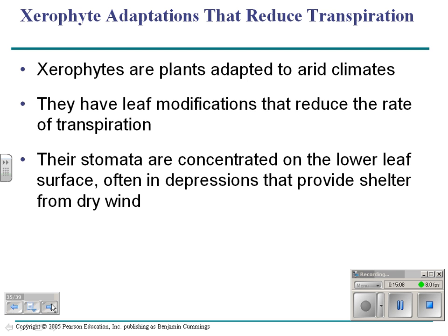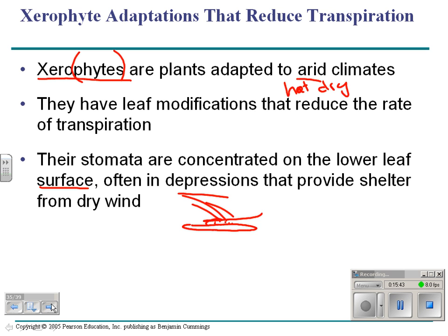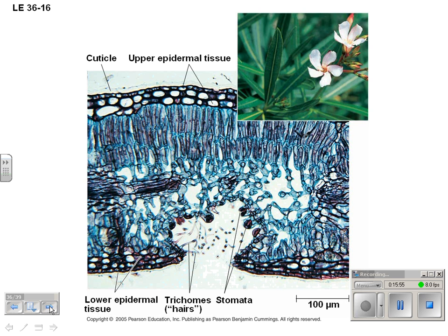One plant adaptation: things called xerophytes — suffix '-phyte' for plant — plants adapted to arid, hot, dry climates. Their modification is to put their stomata on the lower leaf surface in pits. In arid climates with a lot of wind, you don't want stomata on the top of the leaf where wind pulls water molecules away. Placing them on the lower surface away from wind reduces water loss. Here's an example of a stomata in a pit, with two little hairs around it to help trap water.